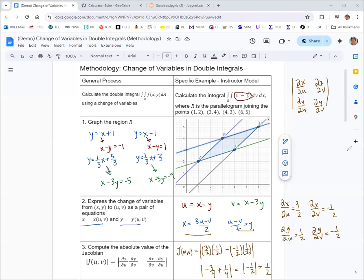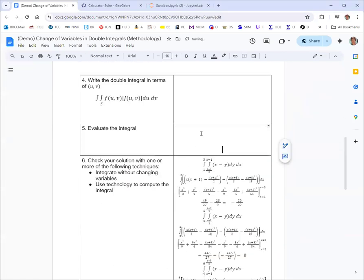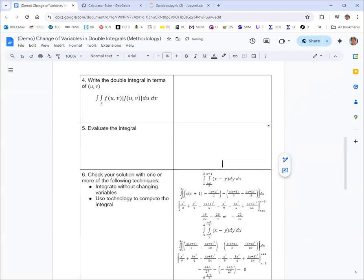So at this point, we're ready to move on and write the double integral and evaluate it. And if we did this, then it should be pretty easy. So this was the integral of x minus y, dy dx in the x, y coordinate system.